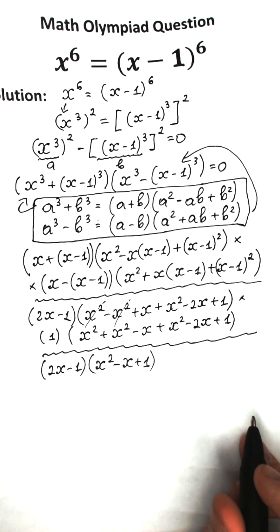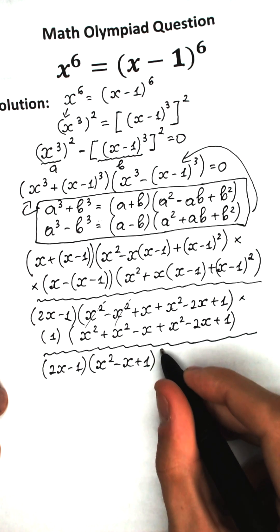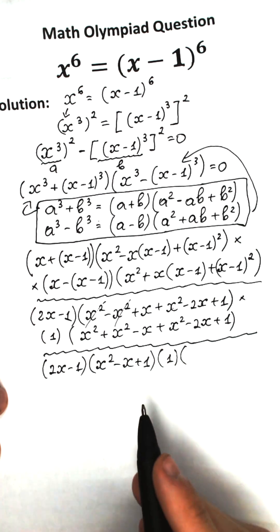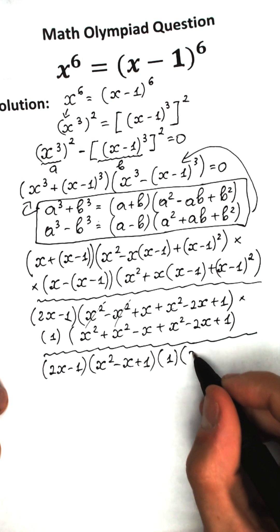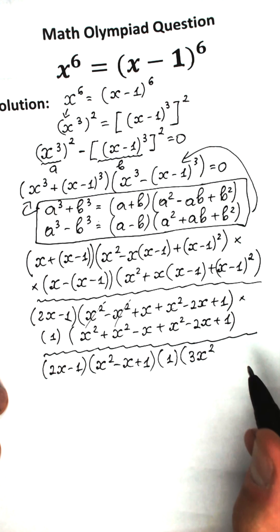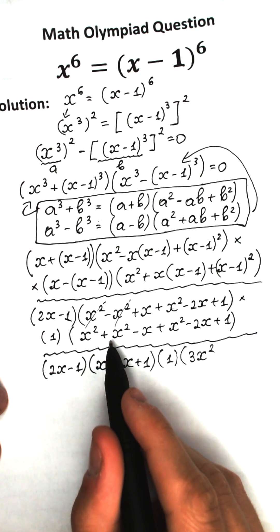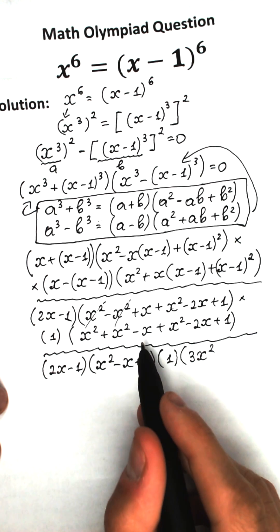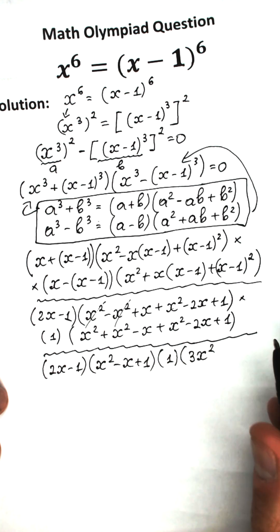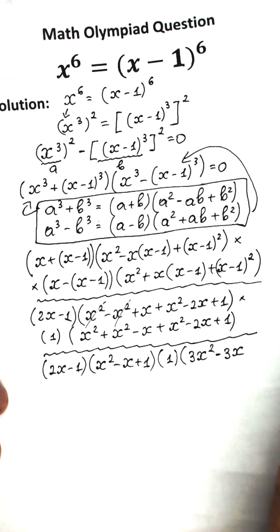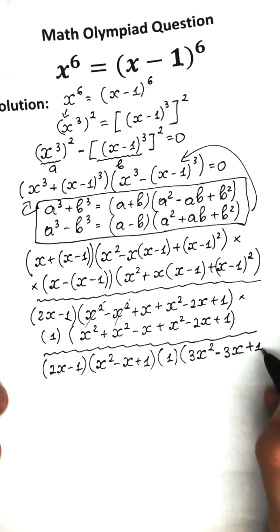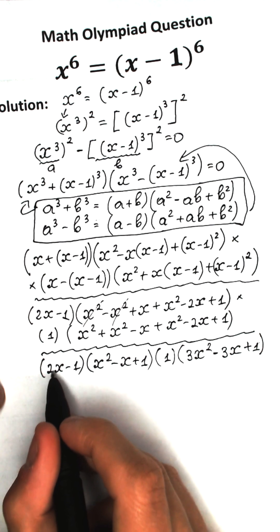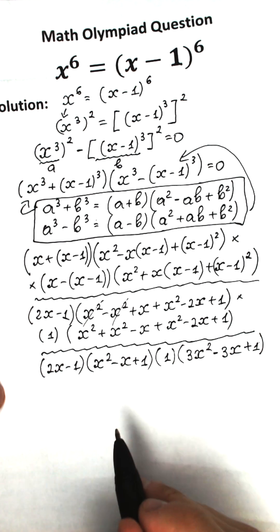For the second parenthesis: x minus x minus one gives just one. And in its bracket: x squared plus x squared plus x squared gives 3x squared; minus x minus 2x gives minus 3x; plus one plus one gives plus one. So the last factor is 3x squared minus 3x plus one.